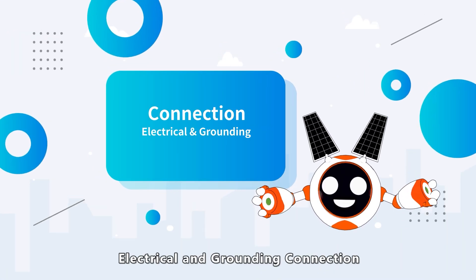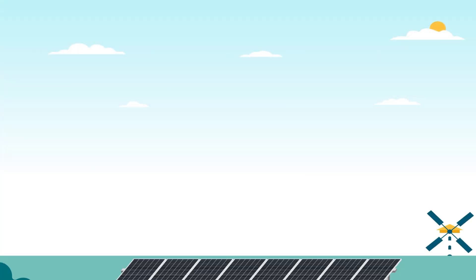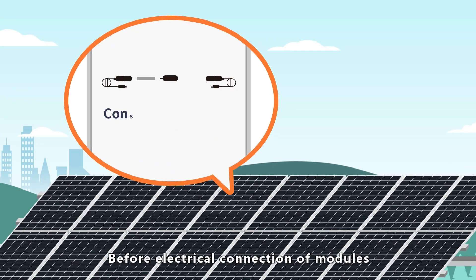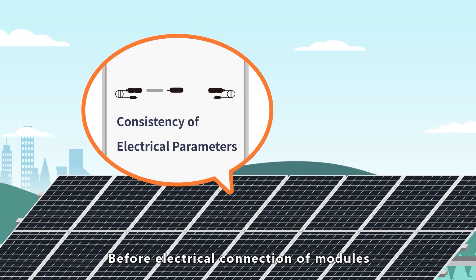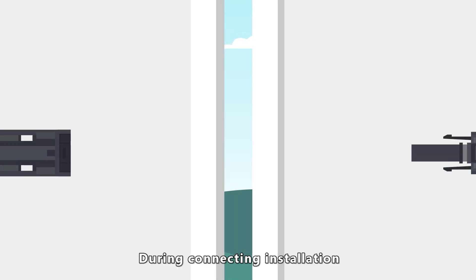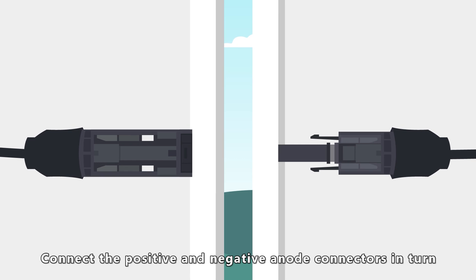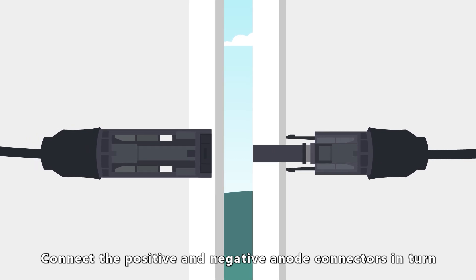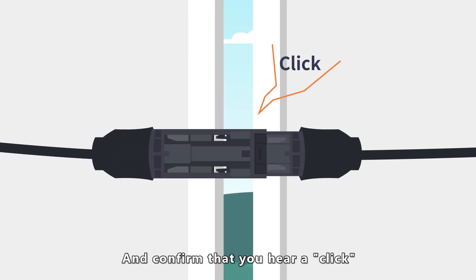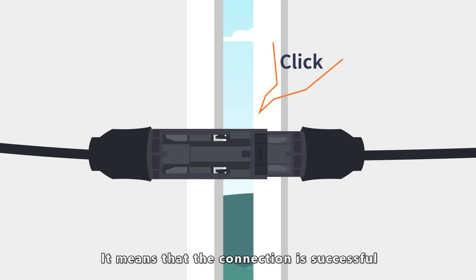Electrical and grounding connection. After the installation, before electrical connection of modules, it is necessary to ensure the consistency of electrical parameters. During connecting installation, connect the positive and negative anode connectors in turn and confirm that you hear a click. It means that the connection is successful.